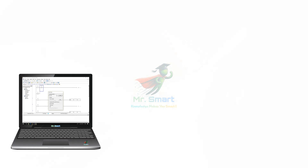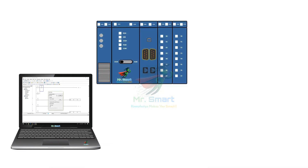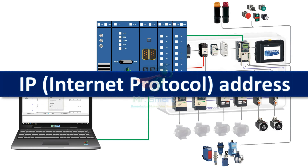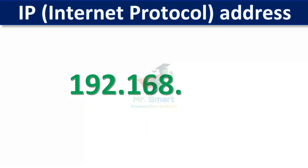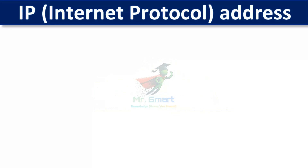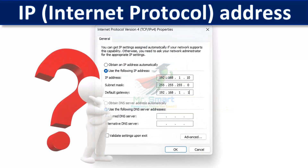Well, computers, PLCs, and industrial devices communicate in the same way. They need a unique address called an IP address to communicate properly. If you get it wrong, nothing works. In this video, we are going to learn what an IP address is and why it is important in industrial automation. Let's get started now.